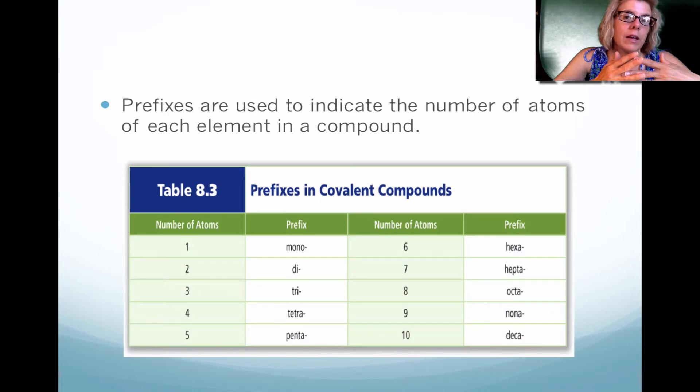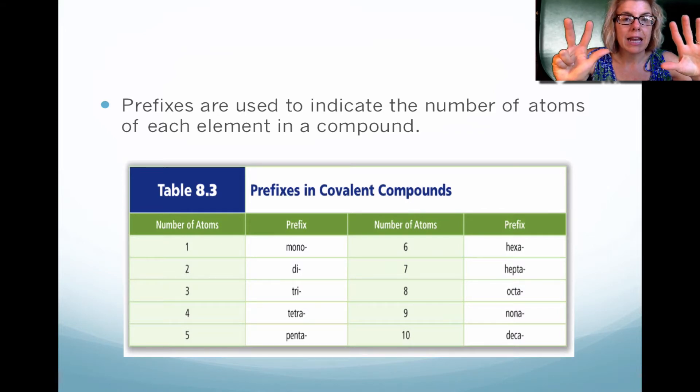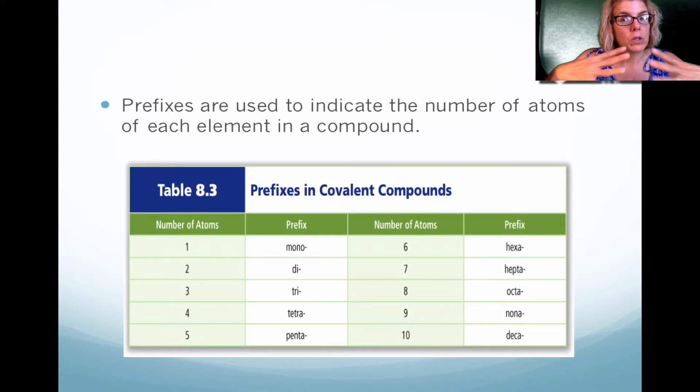Now, before you need to do that, you should look at the prefixes. So in this table, this is something that you need to get familiar with. Notice that if you have 5, we're looking at penta. If you're looking at 8, we're looking at octa. If you're looking at 10, we're looking at deca. So you need to remember those prefixes when you're naming compounds. And it's based on the little subscript that you see to the right of each element.